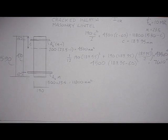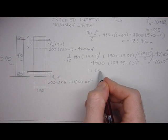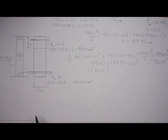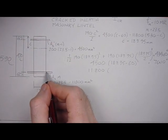And the bottom steel, 11,800, this distance here, which is 530 minus C.